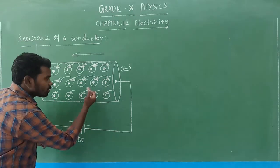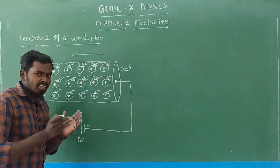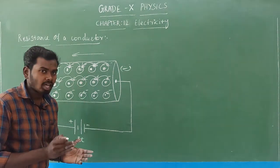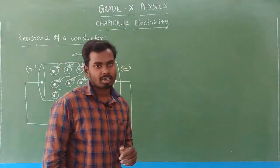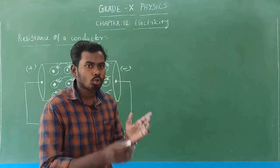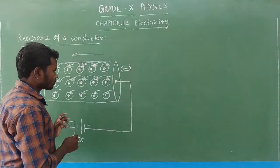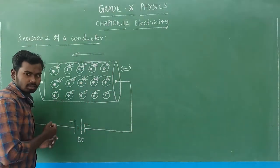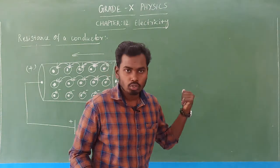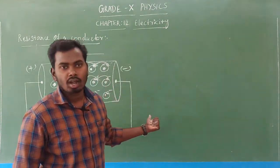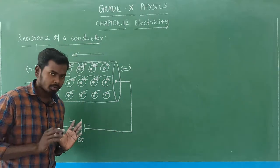Due to this collision, there is some obstruction or opposition to the flow of electrons. This collision is called resistance — nothing more, nothing less. The collision between the electrons and other atoms is what we call resistance.